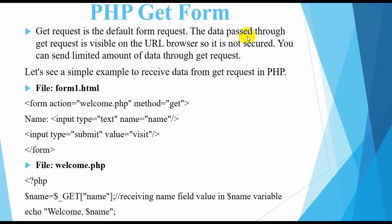PHP GET form: GET request is the default form request. The data passed through a GET request is visible on the URL in the browser, so it is not secured. You can send only a limited amount of data through a GET request. Let's see a simple example to receive data from a GET request in PHP.